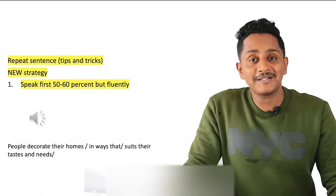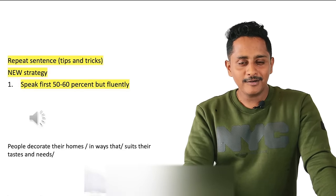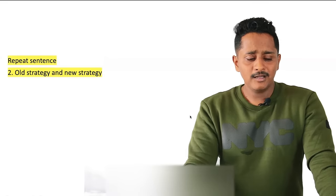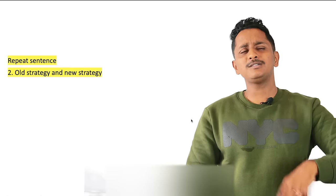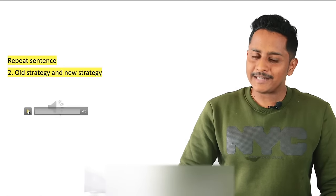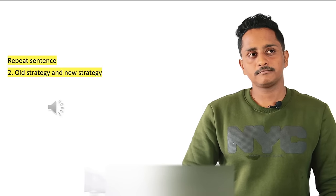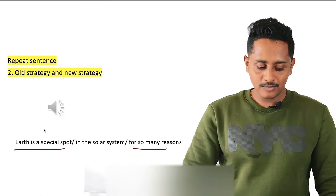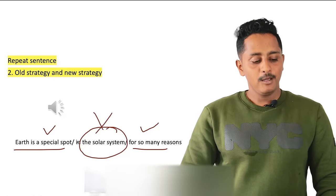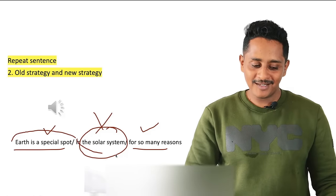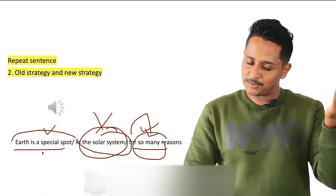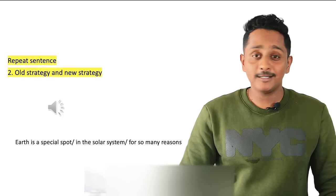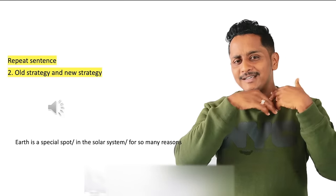This new strategy is working, has been tested, and many of my students are getting the score. Both old and new strategies work — adopt whichever is easier for you. Old strategy example: 'Earth is a special spot in the solar system for so many reasons.' I listen to the first part, I listen to the last part — 'earth is a special spot, for so many reasons' — that's the old strategy. New strategy: 'Earth is a special spot in the solar system' — post that I'm not listening, I'm rehearsing.